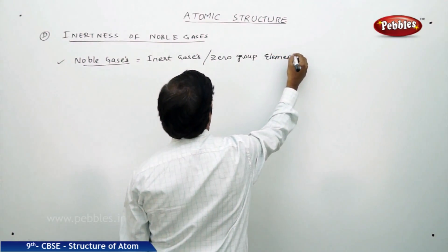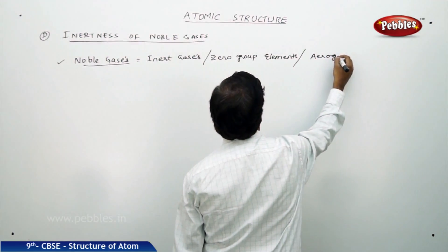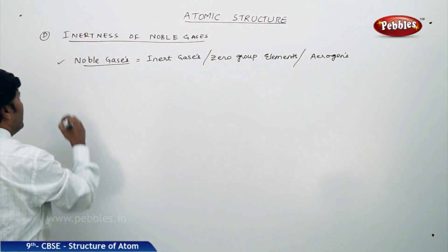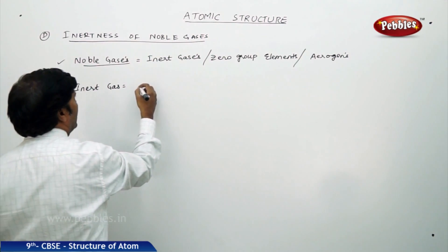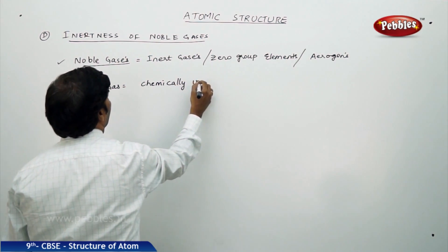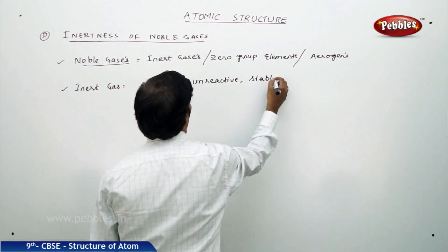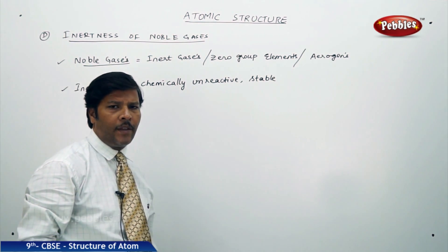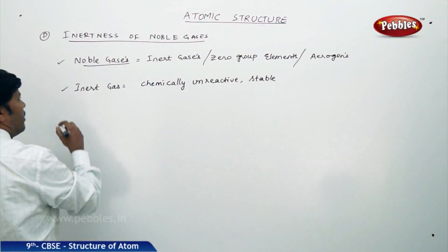Sometimes they are also called erogens. Noble gases are inert gases because they are chemically unreactive and they are stable. It is not easy for noble gas elements to participate in a chemical reaction because they have a stable electronic configuration, and that is the reason we say they are chemically unreactive and stable inert gases.